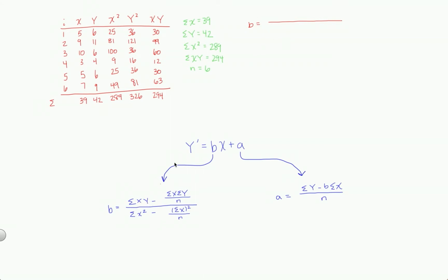So sigma xy equals 294. That's going to be the first value that goes in here, minus sigma x times sigma y over n. So minus 39 times 42 over n, which is 6. And then we have sigma x squared minus sigma x in parentheses squared. So don't make the mistake of putting the same value here and here. These are two different values because of the parentheses.